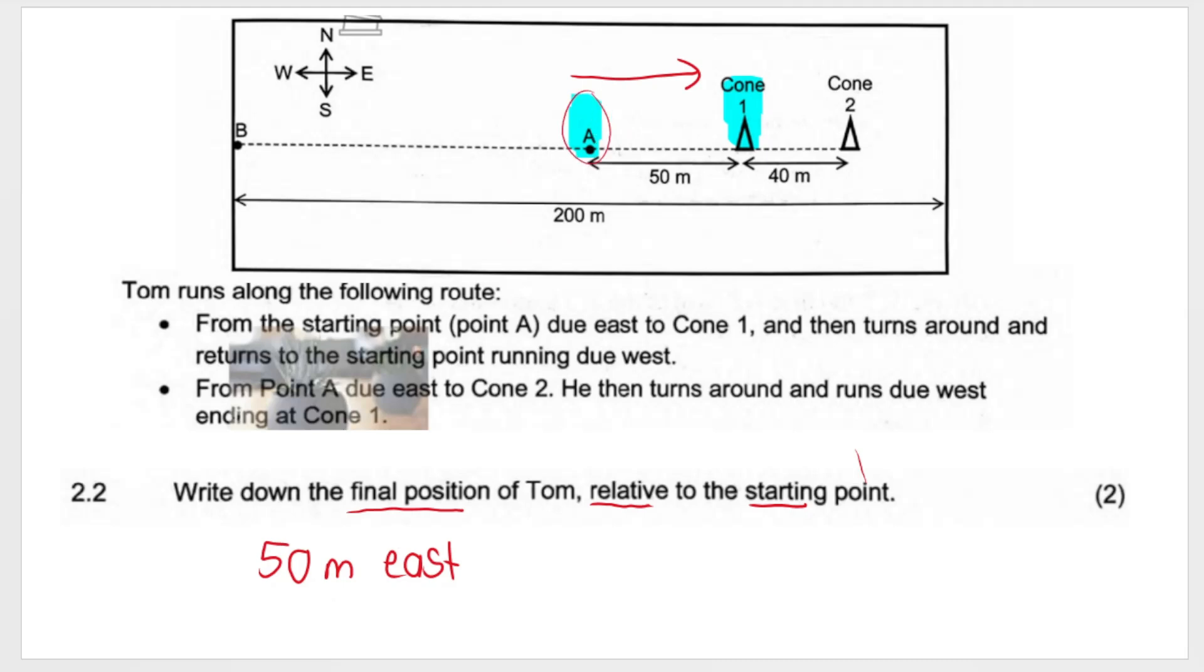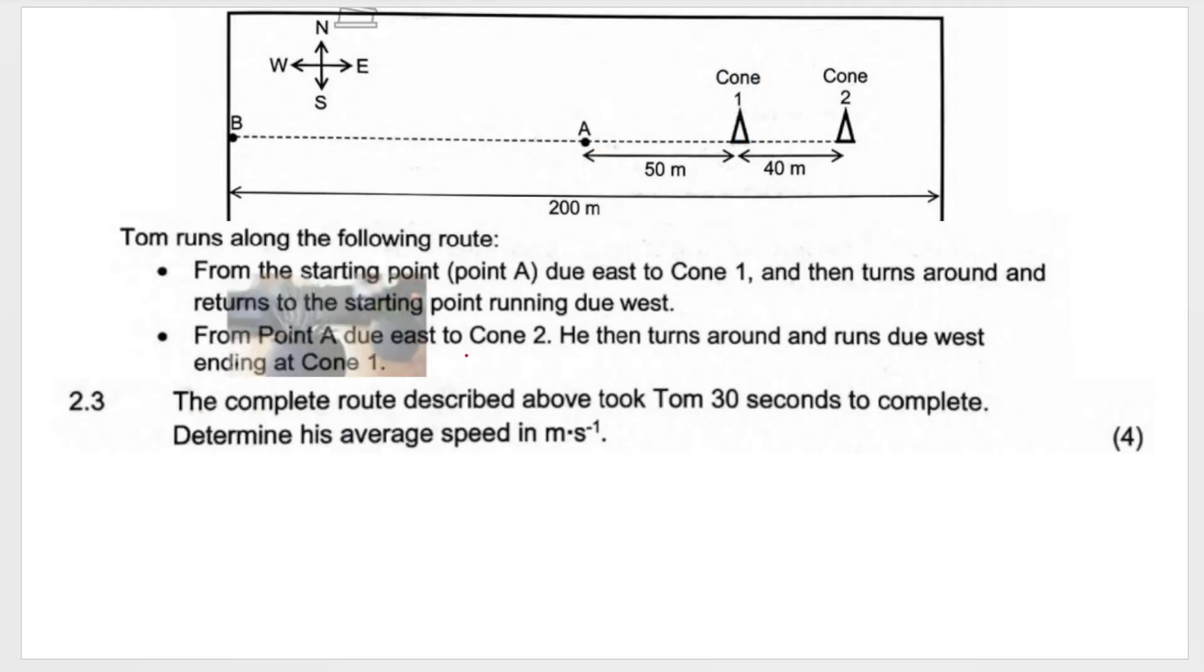That would be your final position: 50 meters to the east. Why are we saying to the east? Because it's relative to the starting point. So he started here, he stopped here. He is 50 meters east of his starting point. In this question, you get a mark for saying 50 meters, a mark for saying east.